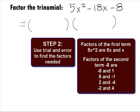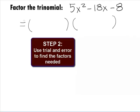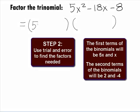Also, we need to make sure that we get the right combination of these factors so that when we multiply them out, we get our trinomial of 5x squared minus 18x minus 8. One possible combination to try is putting the 5x and the x in the first positions and putting a plus 2 and a minus 4 in the last positions.